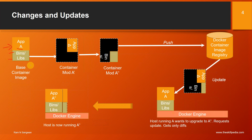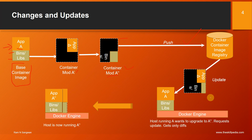What happens if we make changes or update our image? For example, take an application App A which includes binaries and libraries as a base container image. When we add our own layer, we modify this container image and come out with modified container A-dash. Continuing to add, we may have another modification — modified version A-double-dash — and we push this modified version to the registry, where updates are available as an additional layer.